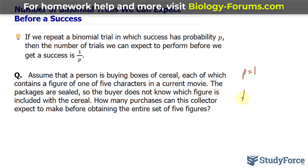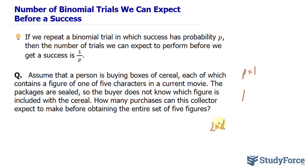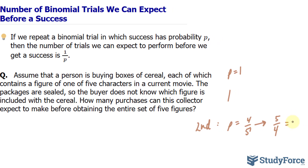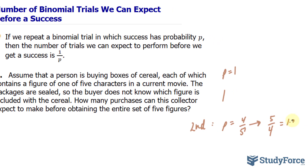Now that you have one of the figures, in your second purchase there is a 4 out of 5 chance that you will get one of the other four remaining figures. So the probability of the second purchase is 4 out of 5, and substituting this into 1 over P — that's like reciprocating this fraction — and the reciprocal is 5 over 4, which equals 1.25.